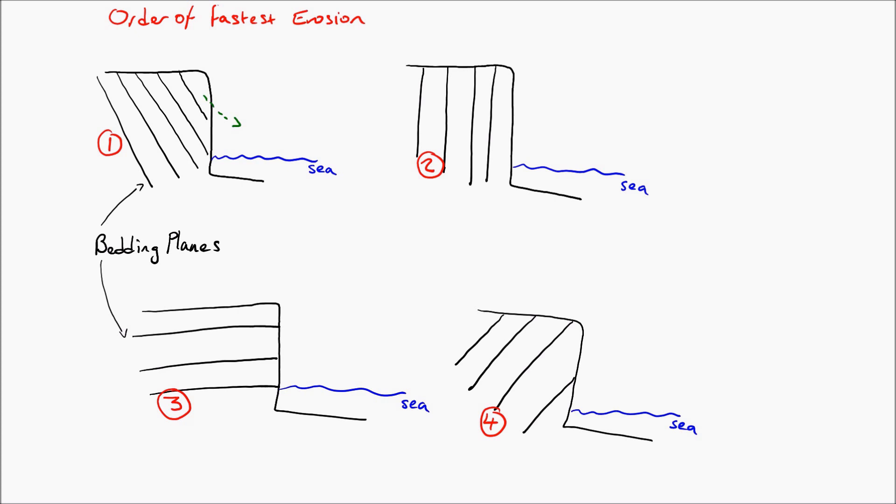Number one erodes fastest because the bedding planes are slanting towards the sea. This means that gravity wants to drag them and they want to slump or to slide into the sea.